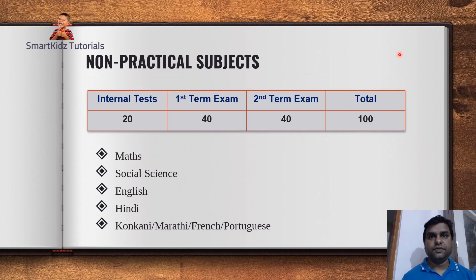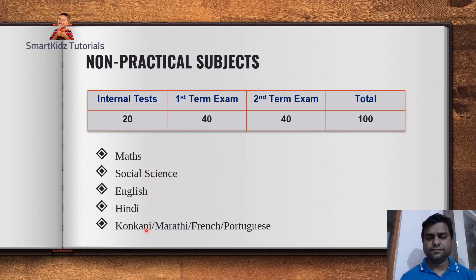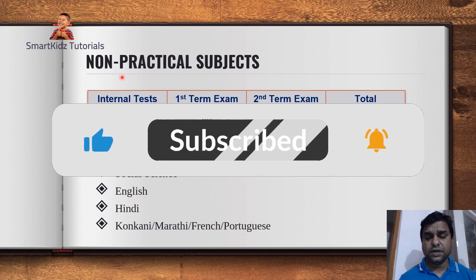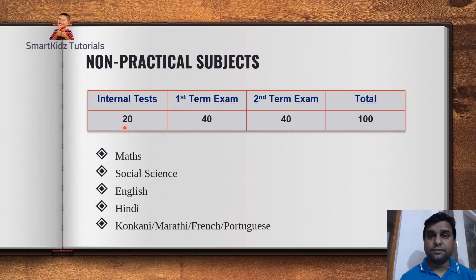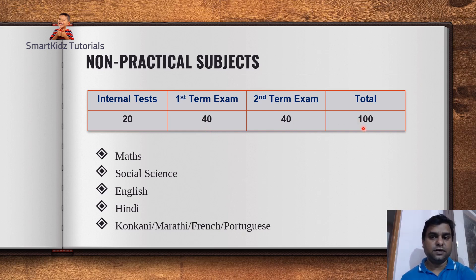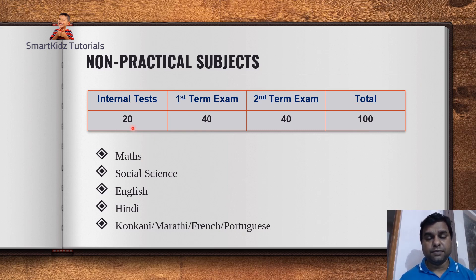The Goa board has divided mark allocation into two parts: non-practical subjects and practical subjects. Non-practical subjects include Math, Social Science, English, Hindi, and the third language of your choice — Konkani, Marathi, French, or Portuguese. For non-practical subjects, the internal examination marks assigned by teachers are 20. The first term exam was 40 marks and the second term exam was also 40 marks. Let's take Maths as an example — you had two exams of 20 marks each.